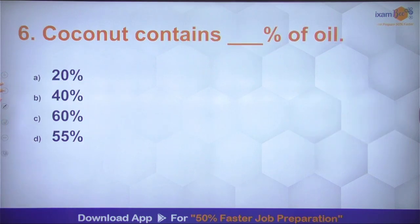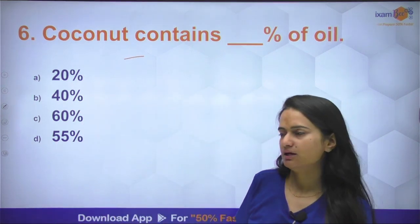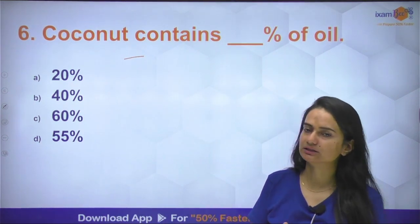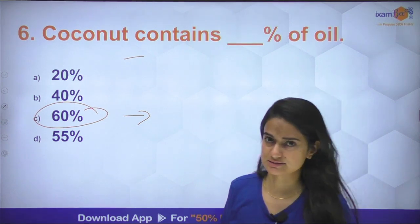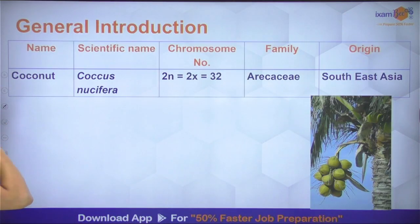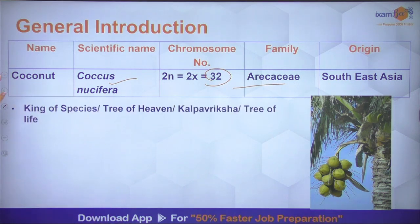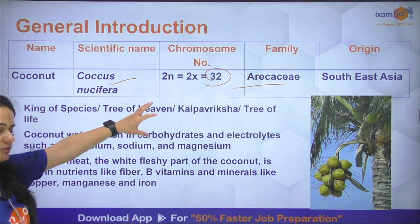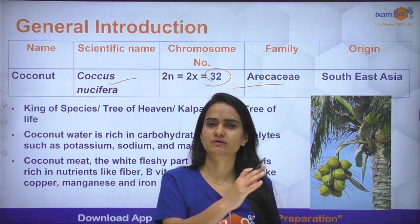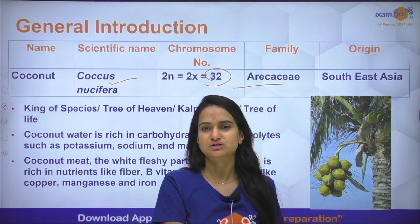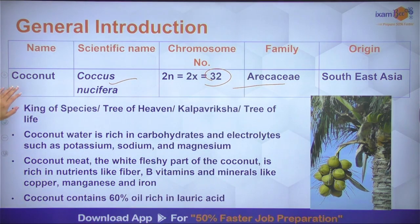Question number 6: coconut में कितना percent oil present होता है? Coconut एक fruit crop है जिससे oil भी extract किया जाता है। इसमें 60 percent oil होता है, और oil में सबसे ज्यादा lauric acid पाया जाता है। Coconut का scientific name Cocos nucifera है, chromosome number 32, family Arecaceae, origin Southeast Asia। इसे Tree of Heaven या Kalpavriksha भी कहते हैं। Coconut water electrolytes से भरपूर होता है और basically fruit का endosperm होता है।